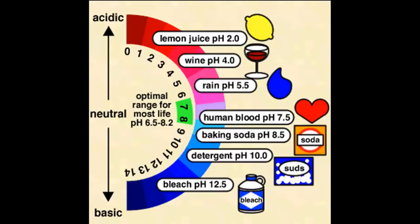What we're striving for in our patients is an optimal range of about 7.4. Lemon juice is very highly acidic at 2.0 — squirt some in your eye and you'll realize how acidic it really is. Wine is acidic at a pH of 4. Rain has a pH of about 5.5, getting closer to where the body is. Human blood is around 7.4, with a range of 7.35 to 7.45. Baking soda has a pH of 8.5, laundry detergent around 10, and bleach about 12.5 — very alkalotic.